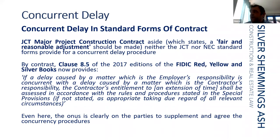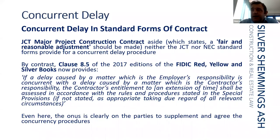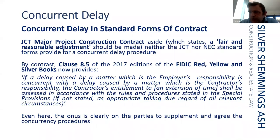Looking at how standard forms of contract deal with these points: neither the JCT nor the NEC standard forms provide any mechanism with a concurrent delay procedure. It is quite a difficult area — we go into base points of causation. Just because neither the JCT nor the NEC deal expressly with concurrency, going back to their first-principle approach, it doesn't mean that parties don't use the time before the contract period to crystallise and address the issue.